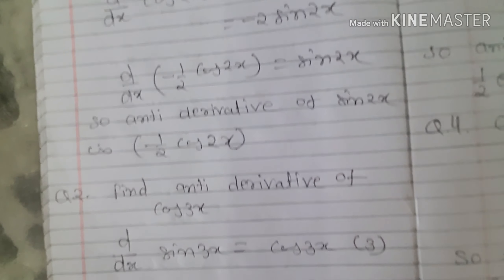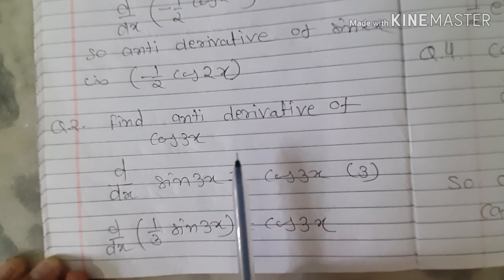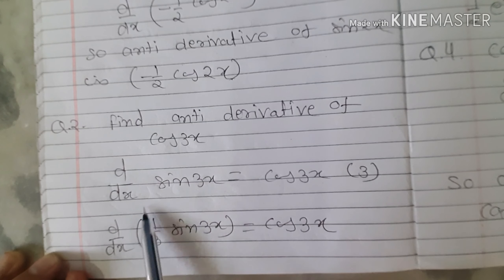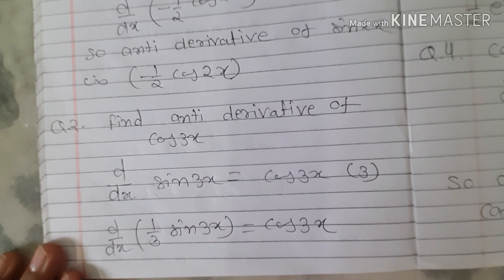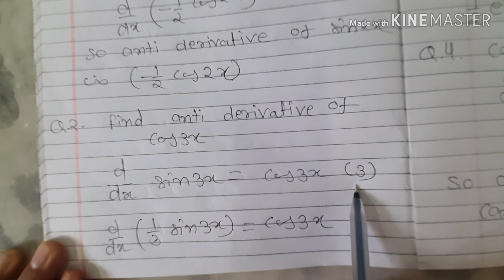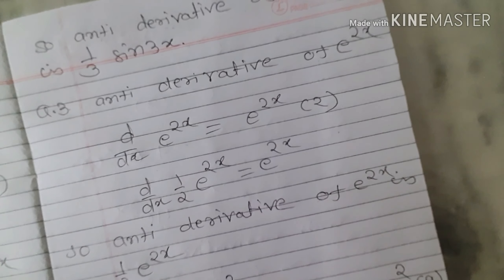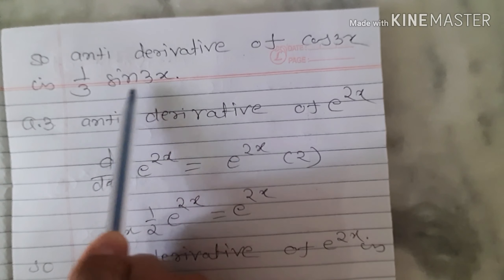Question 2: find the antiderivative of cos 3x. We search for a function whose differentiation equals cos 3x. Differentiating sin 3x: d/dx of sin 3x equals cos 3x times d/dx of 3x, which equals 3. Cross-multiplying, d/dx of (1/3)sin 3x equals cos 3x. So antiderivative of cos 3x is 1/3 sin 3x.